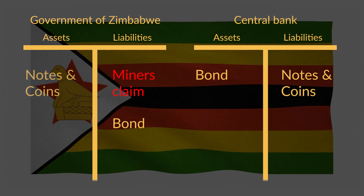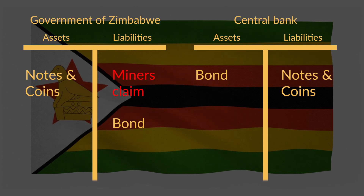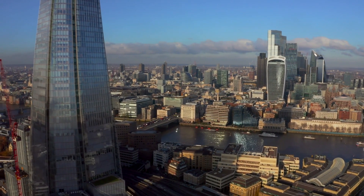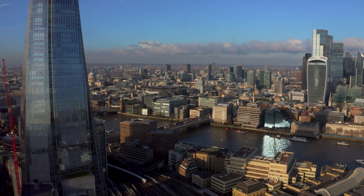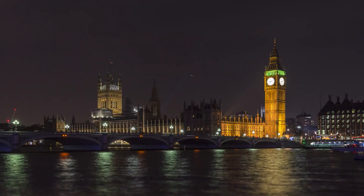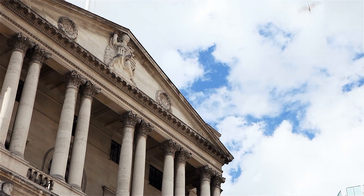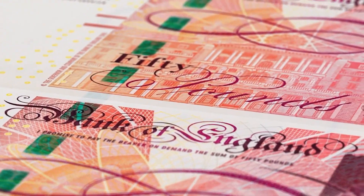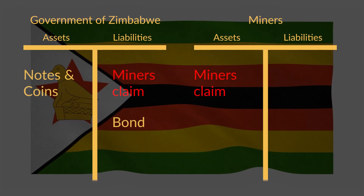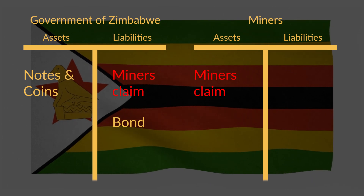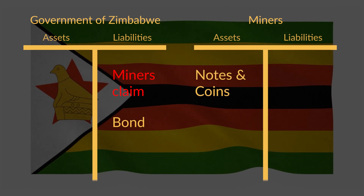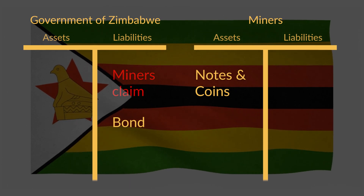This new money appeared on the asset side of the government balance sheet, meaning the government then also had a claim on the central bank. At this point, it is important to take a step back and observe what actually happened. In effect, what took place was nothing more than a swap of debts. The government issued a liability and so did the central bank. The government now has a claim on the central bank and the central bank has a claim on the government. Importantly, the claim that the government has on the central bank is money. And that brings us to step 4: the government used these notes and coins to pay the owners of the gold mines, and the liability that the government had to these mine owners was redeemed.